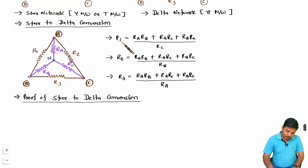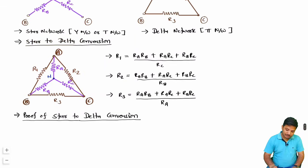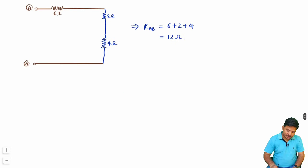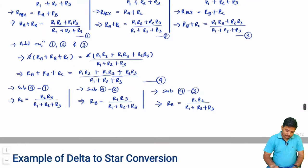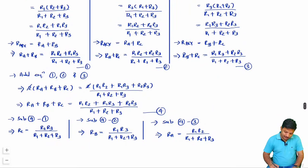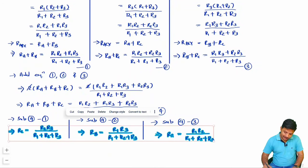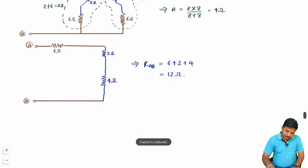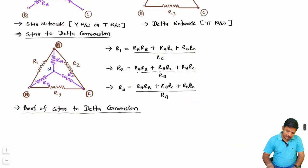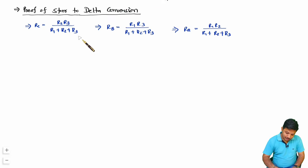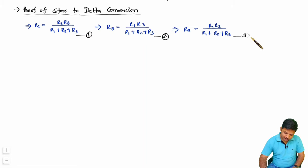To prove the formulas for R1, R2, and R3, I will use the delta to star conversion formulas from my previous video, where we proved RA, RB, and RC. I will take those three equations — equation 1, equation 2, and equation 3 — and use them to derive the star to delta conversion.